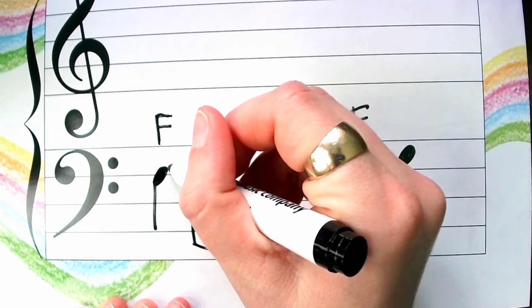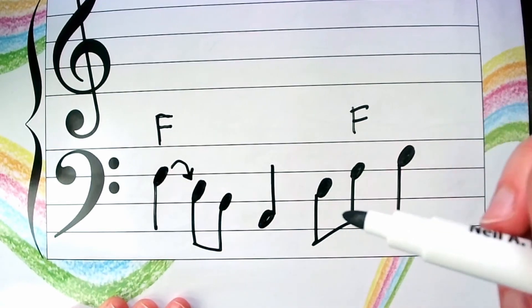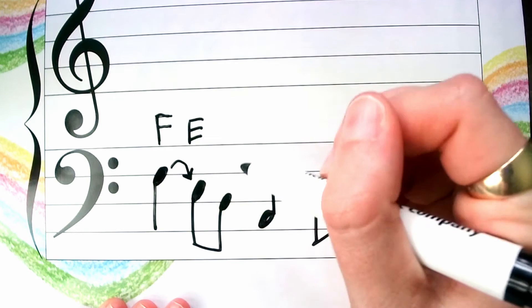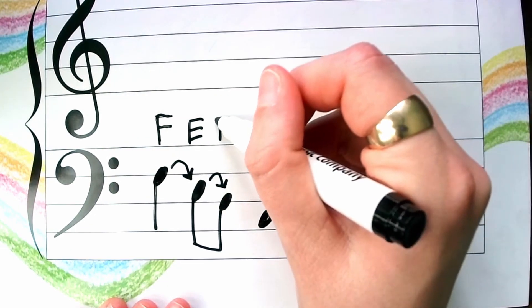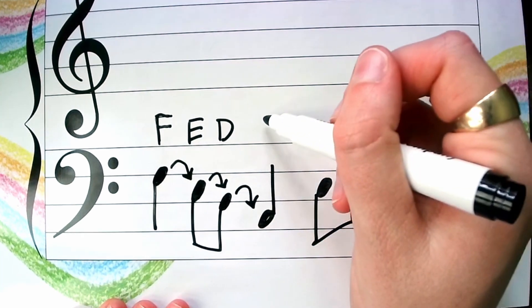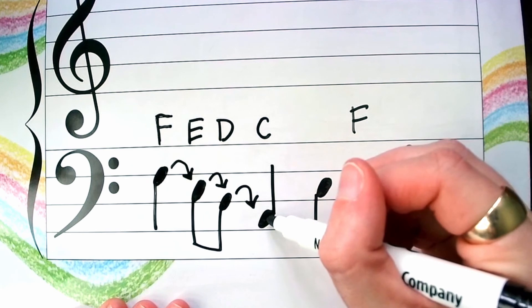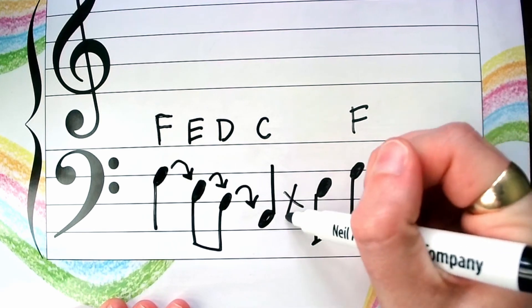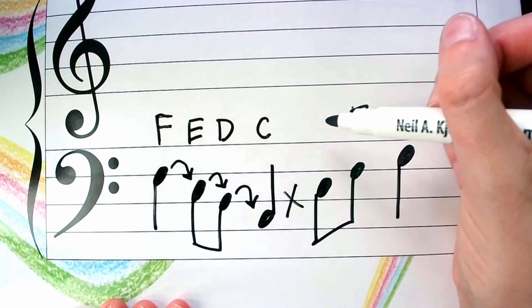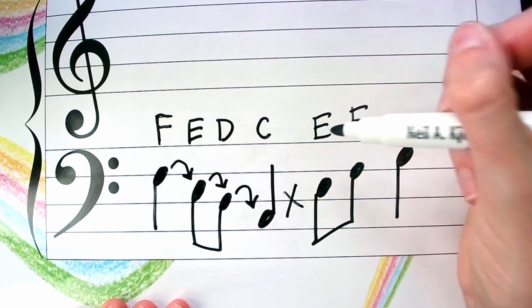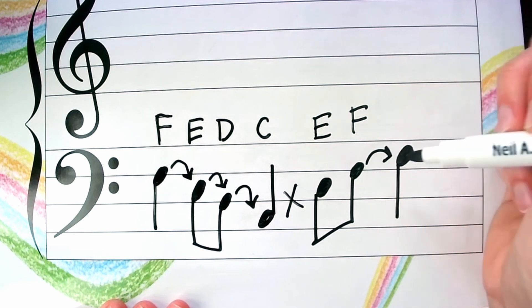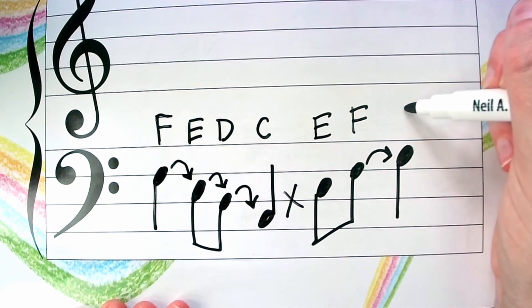We're going down from a line to a space. This is a step. Down on the staff means backwards in the alphabet. So one before F is E. Another step down and backwards is D. Another step down and backwards is C. Now we're going from space to space. So this is a skip. We need to skip forward in our alphabet since we're going up the staff. So C, skip D, E. We know our F is here. And then we're going up by a step. So one letter after F would be G.